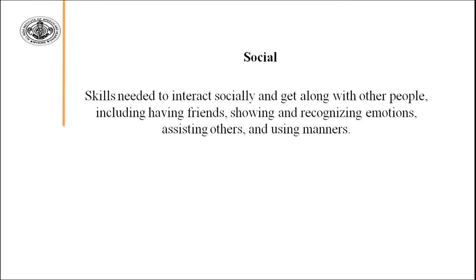The next skill is social skills — needed to interact socially and get along with other people, including having friends, showing and recognizing emotions, assisting others, and using manners. To live in society, interaction with known and unknown people, making friends, and recognizing emotions are very important. This is also a very important adaptive skill.